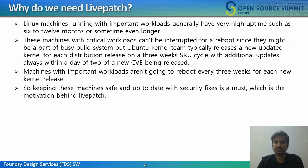Next is why do we need Livepatch? It is pretty common to see bug reports from Linux machines which have very high uptime such as 6 to 12 months or sometimes even longer — for example, factory control machines. These machines normally run important workloads which can't be interrupted for a reboot since they might be part of critical public infrastructure or a busy build system. The Ubuntu kernel team typically releases a new updated kernel on a 3-week SRU cycle, with additional updates within a day or two of a new CVE being released.